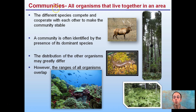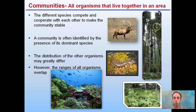Looking at communities, let's first define a community. All organisms that live together in an area are defined as a community. It can be a little hard to define because of the scale of area we're talking about. The different species compete and cooperate with each other to make a community stable. A community is often identified by the presence of a dominant species, and the ranges of all organisms overlap, as we see with trees, shrubs, ferns, and salamanders.